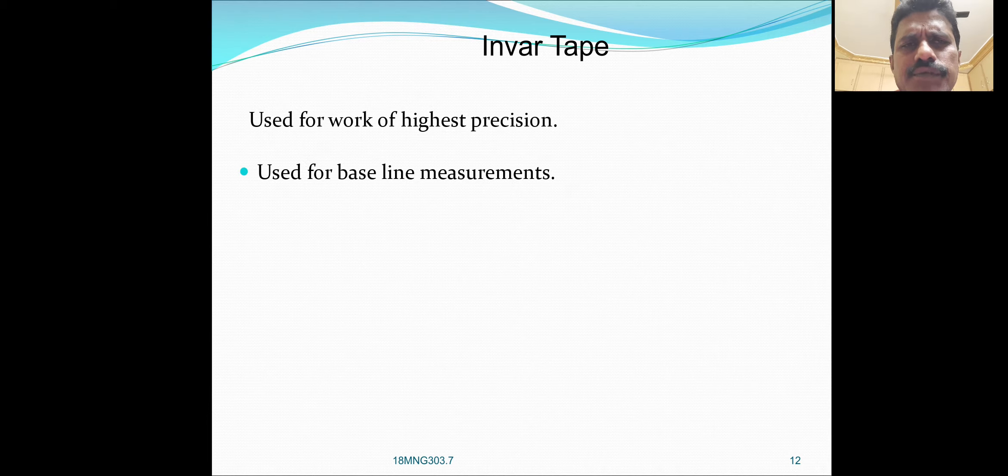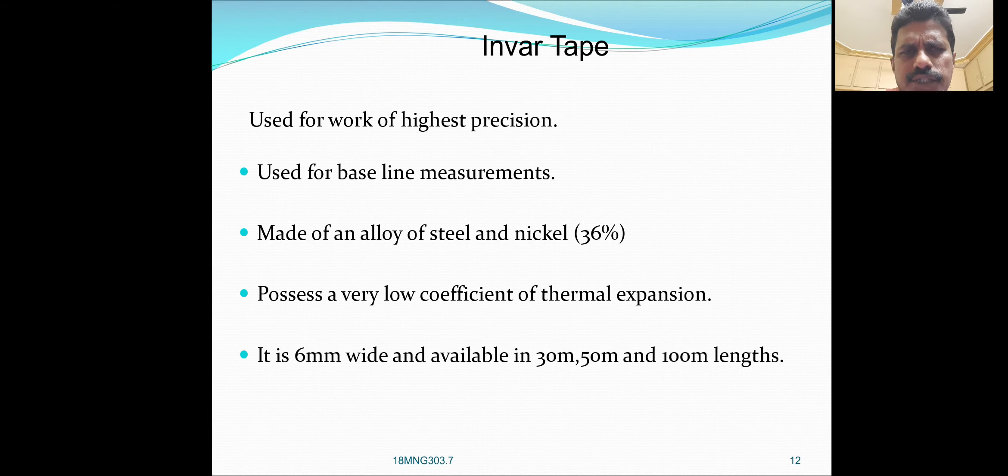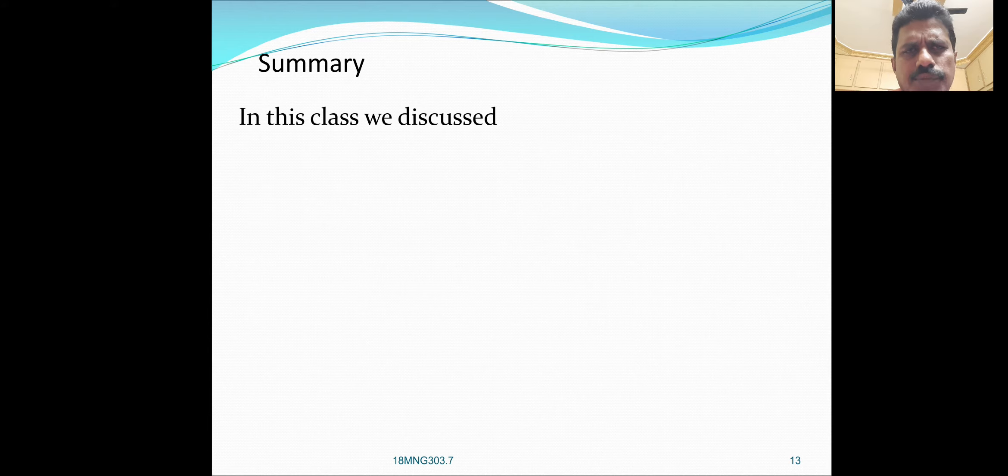Invar tape is used for work of highest precision, used for baseline measurements. Made of an alloy of steel and nickel 36 percent. It has very low coefficient of thermal expansion. It is 6 mm wide and available in 30 meters, 50 meters and 100 meters lengths.